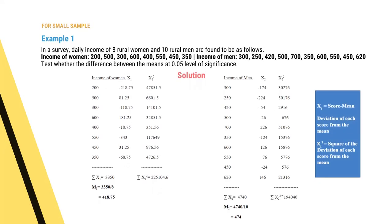For women, the sum of scores is 3350, giving a mean M1 = 418.75. We then compute x1, the deviation of each score from the mean, and then x1², the squared deviations. The sum of x1² = 225,104.6. Similarly for men, the mean income M2 = 474. We compute x2 (deviation of each score from the mean) and x2², giving sum of x2² = 1,94,040.